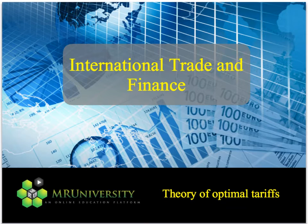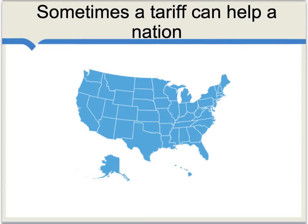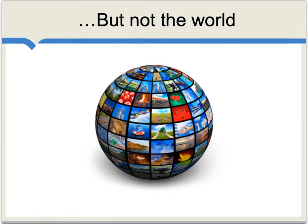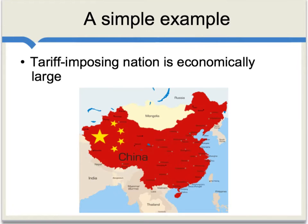Let's consider the theory of optimal tariffs. What we'll see here is that sometimes a tariff can help an individual nation, but without helping the world as a whole. I'll show this with a simple example, but the key assumption is that the tariff-imposing nation is economically large, in the sense that it can, to some extent, alter world prices.